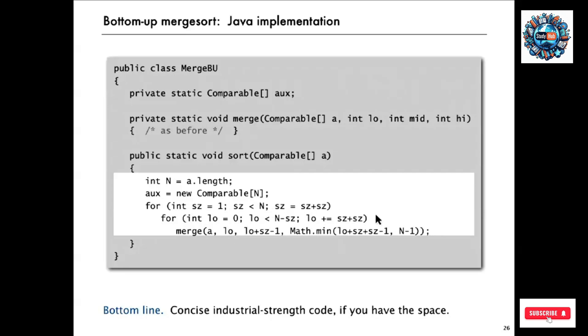And then we pass through picking out from low to low plus size minus 1, and then the next part is low plus size to low plus size plus size minus 1, until we run to the end of the array. We might not have a full subarray of size SZ. That is fully complete industrial strength code for sorting.